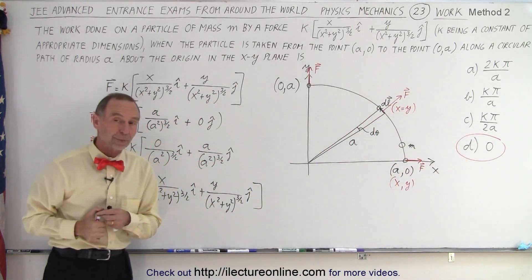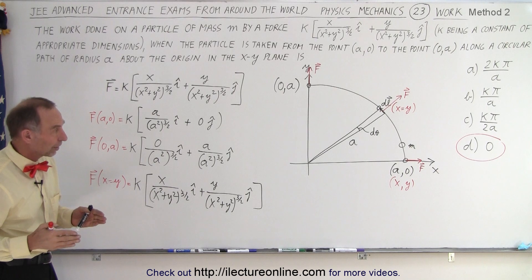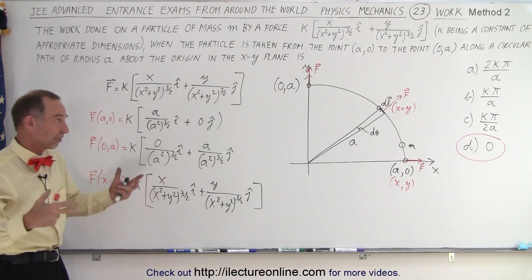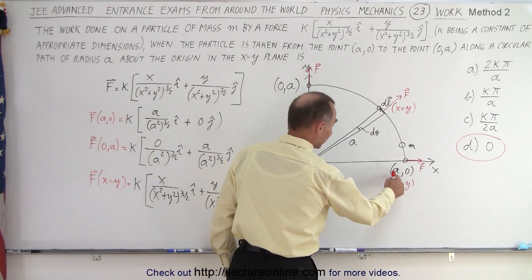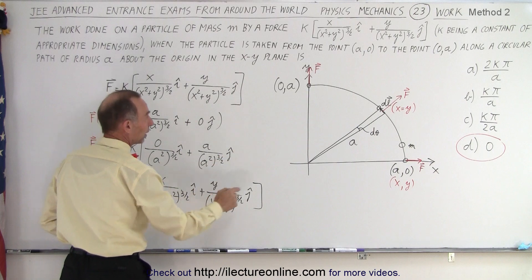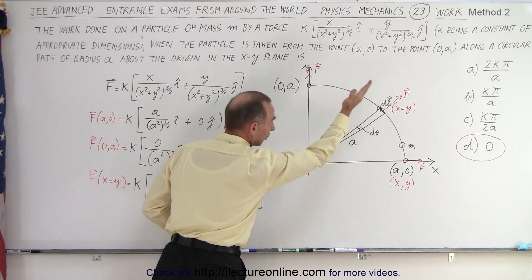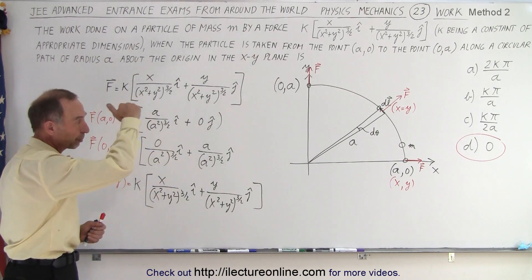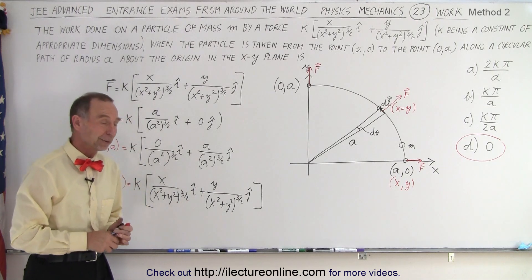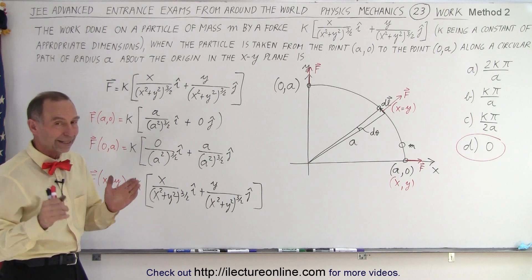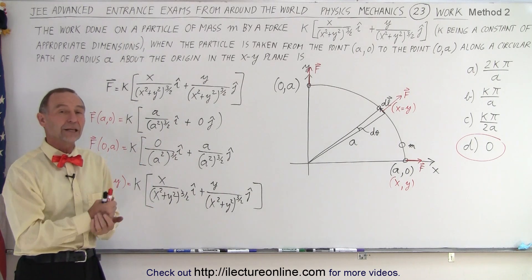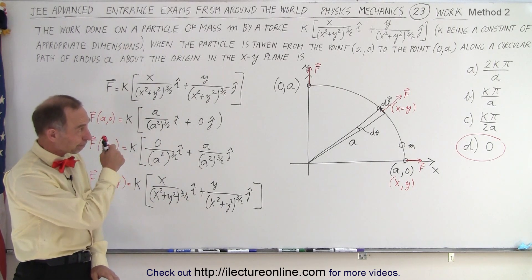No work is done when the displacement and the force are at a 90-degree angle. And that is how it's done very quickly. You don't have to write it all down — you can simply say: at x equals A and y equals zero there's only an x component; at 0A there's only a y component; at the 45-degree point the x and y components are equal. The force is always perpendicular along the path of integration, so the answer is zero. You can see that in one minute and move on to the next problem, if you think about it in the correct way without going through all the integration steps.